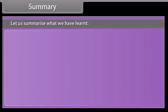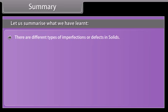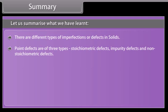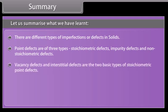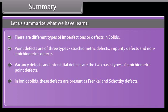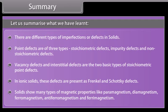Summary: Let us summarize what we have learned. There are different types of imperfections or defects in solids. Point defects are of three types: stoichiometric defects, impurity defects, and non-stoichiometric defects. Vacancy defects and interstitial defects are the two basic types of stoichiometric point defects. In ionic solids, these defects are present as Frenkel and Schottky defects. Solids show many types of magnetic properties like paramagnetism, diamagnetism, ferromagnetism, anti-ferromagnetism, and ferrimagnetism.